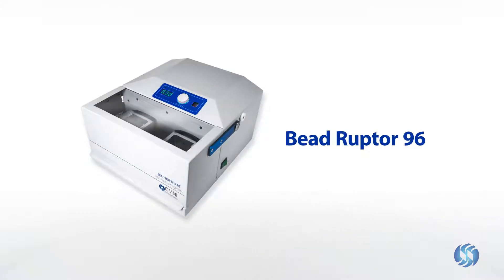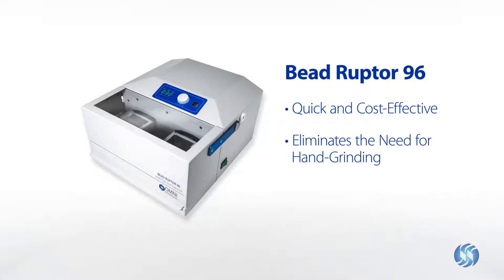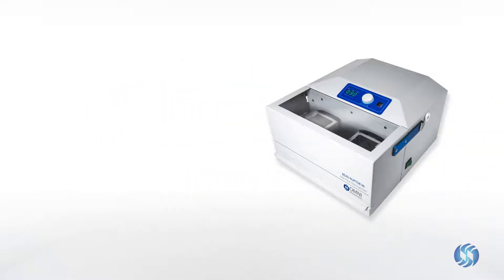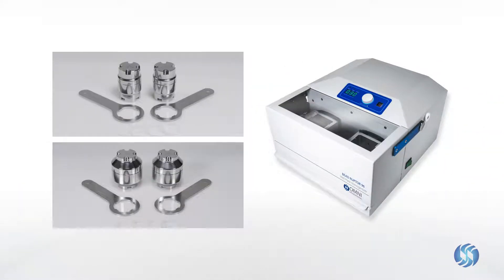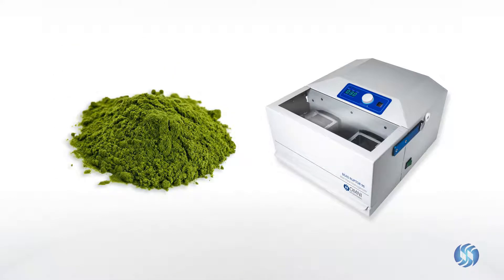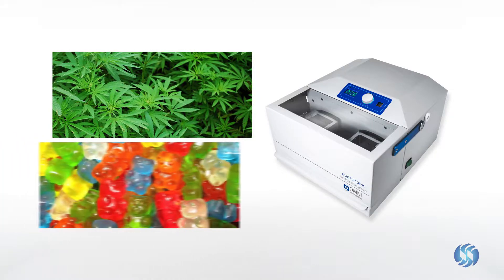The BeadRuptor 96 offers a quick and cost-effective approach, eliminating the need for hand grinding. The BeadRuptor 96 utilizes reusable grinding chambers which, when combined with a minimal amount of liquid nitrogen, can turn any sample into a fine powder, including plant materials and edibles.